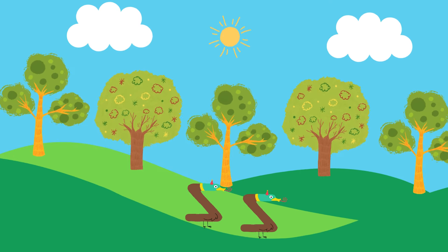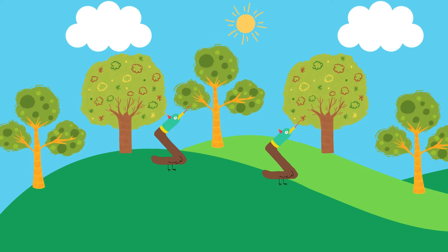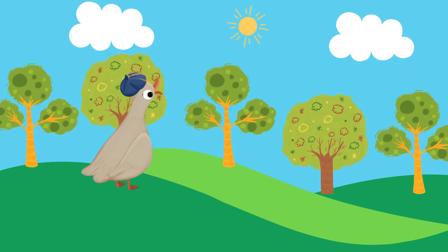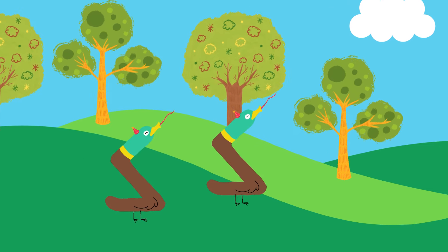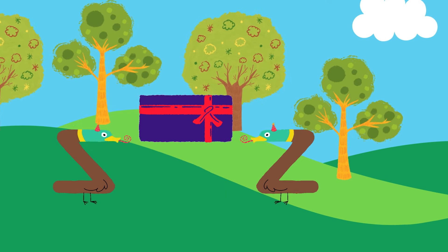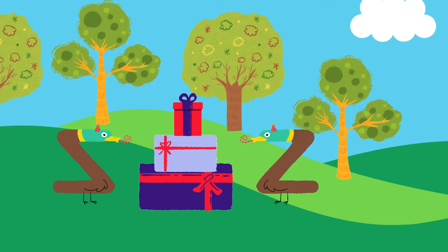Two little ducks went out to play, over the hills and far away. Mother duck said, quack, quack, quack, quack. Two little ducks went out to find, presents wrapped up, all kinds and kinds, with bows and ribbons, shiny and bright.